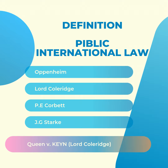Oppenheim defines the law of nations or international law as the name for the body of customary and conventional rules which are considered legally binding by civilized states in their intercourse with each other. There are also definitions by J.L. Brierly and Hackworth, which say that international law consists of a body of rules governing the relations between states.